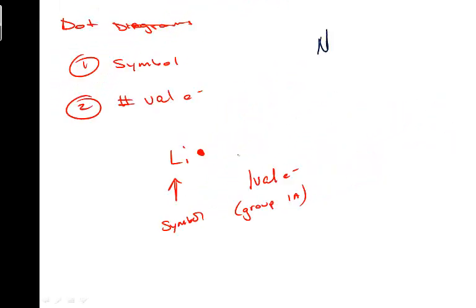Let's look at nitrogen. Nitrogen is in group 15, so it'll have five valence electrons. So, what we're going to do is, we'll start one, two, three, four, five.